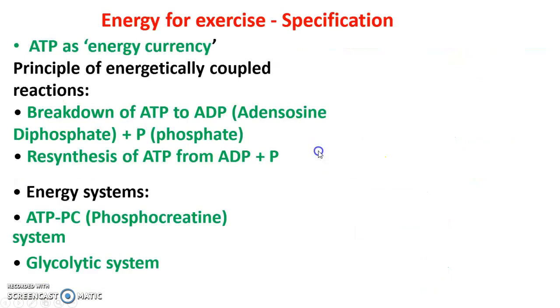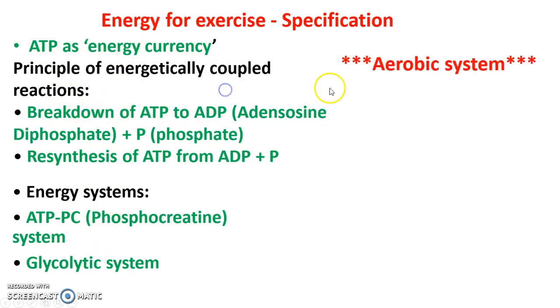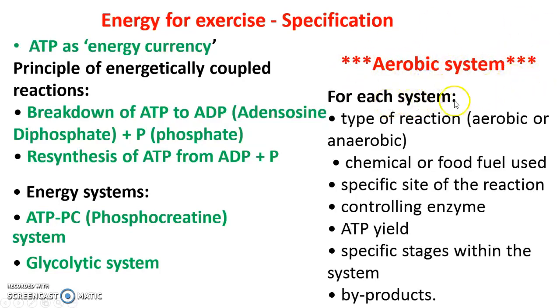Looking at the specification, this is what you've done so far with regard to energy systems, which leaves us just one energy system to complete: the aerobic energy system. By the end of your lesson on this, you should be able to work through key areas — fuels broken down, site of the reactions, control and enzymes, ATP yield, stage names, and byproducts.